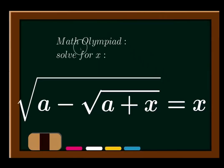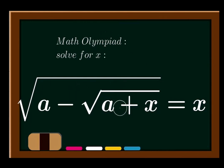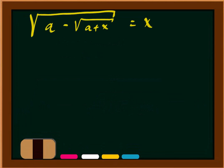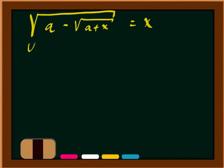Welcome to this nice Olympic question. It is: square root of (a minus square root of (a plus x)) is equal to x.